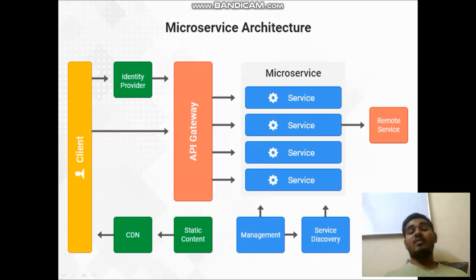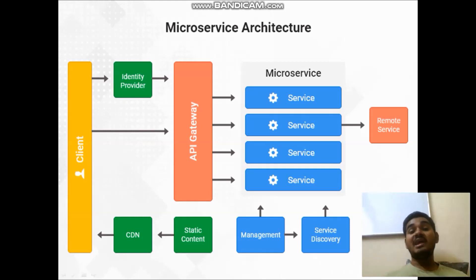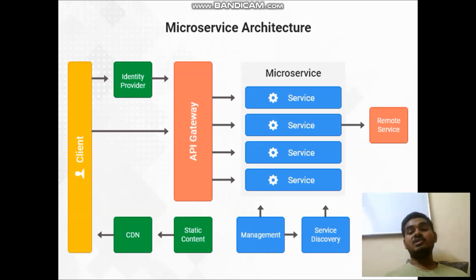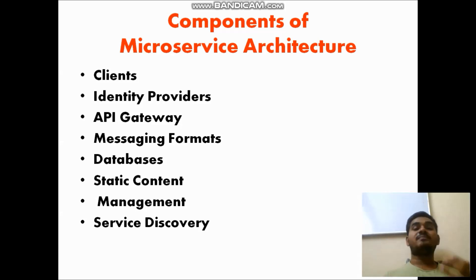This is how microservice architecture looks. There is a client and an identity provider — the identity provider gives you authentication to access a particular service. There is an API gateway, which is an important component in microservices; it provides an application programming interface for a particular service. All microservices are linked with the API gateway, so if the client requests a particular service, the API gateway will provide it. Static content and CDN are the content which microservices provide to the client. Remote service refers to what microservices are requested by the client.